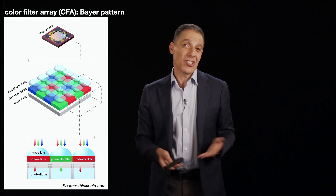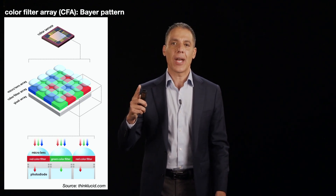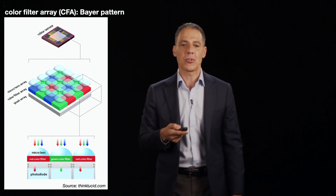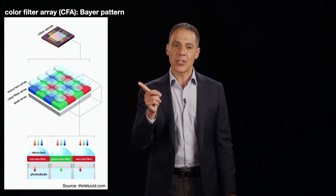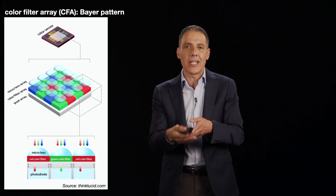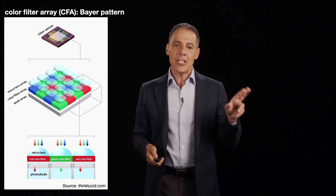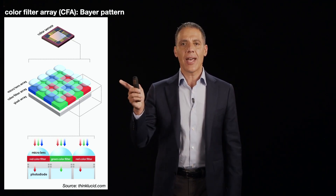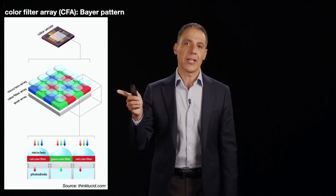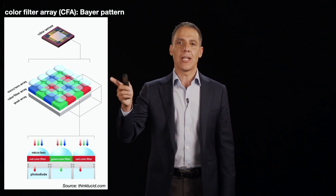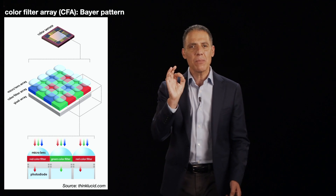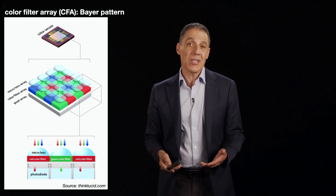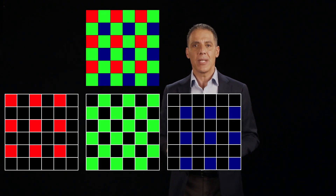What modern cameras do is they cheat. They place onto the sensor a color filter array — a very particular one called a Bayer pattern, which is probably the most common. On top of each color cell is a tiny lens that focuses the light down onto it. Each of those little cells corresponds to a single pixel. So one cell records red light, the next is green, then red, then green, then blue, and so on. Every pixel records only one of the values needed for a full RGB image.